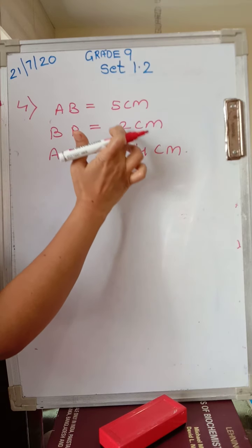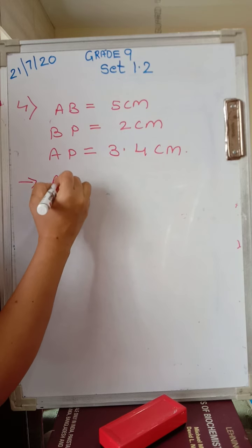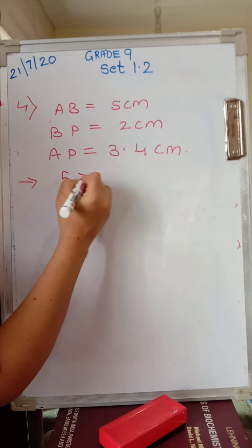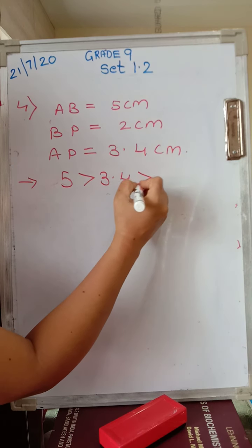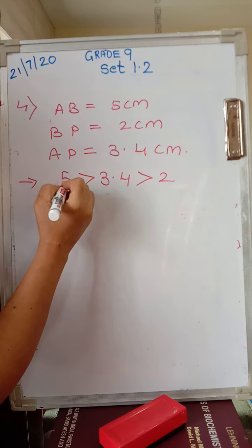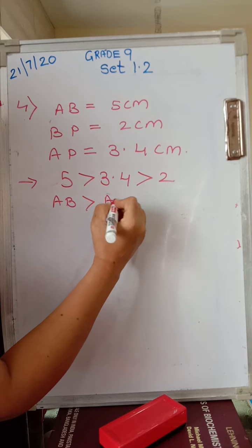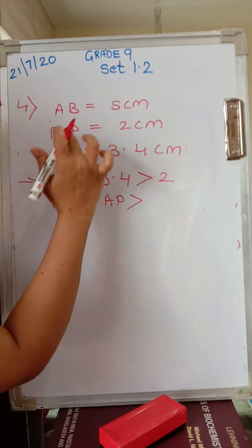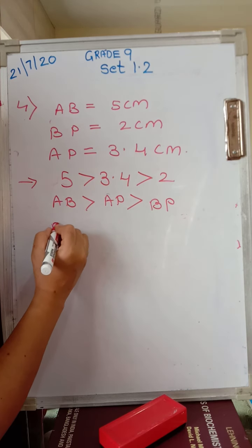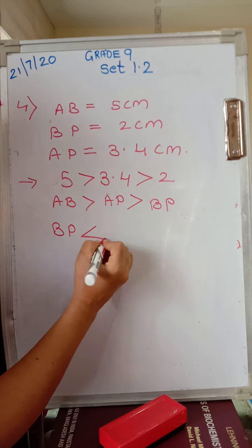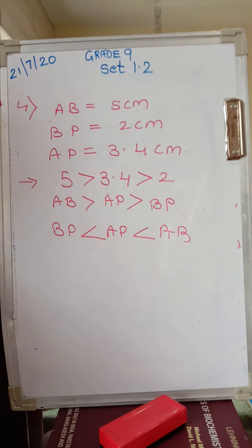Comparison is always regarding the lengths. So which is the largest segment? AB. Your answer can be: because 5 is greater than 3.4, and 3.4 is greater than 2, we can write AB is greater than AP, and AP is greater than BP. In terms of less than sign, we can write BP is less than AP, and AP is less than AB. Both ways you can write.